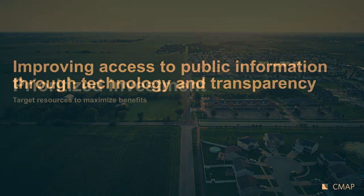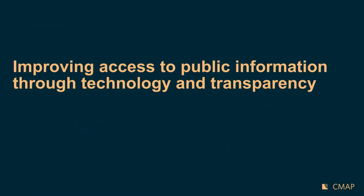On To 2050 covers many policy areas of interest. Tonight I'll focus on one recommendation from our governance chapter: improving access to public information through technology and transparency. This recommendation is addressed to all of our government partners, from the federal level down to the smallest units of local government. When it comes to improving access to data, we try to lead the way at CMAP and be a good example for what we'd want from our partners.